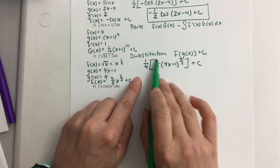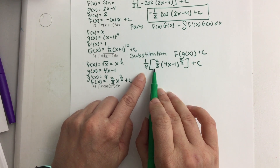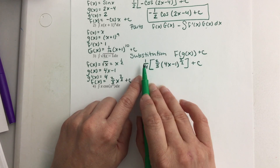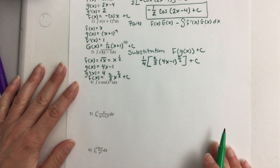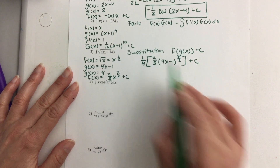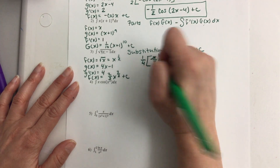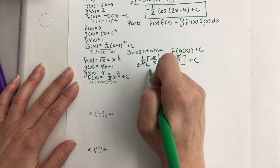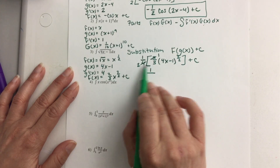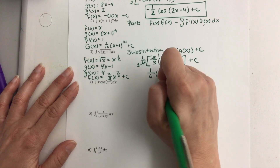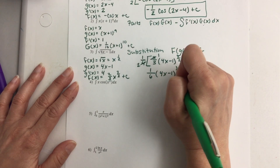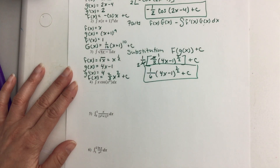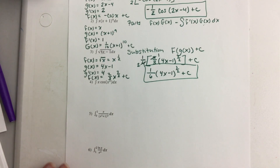Now the antiderivative of f of x: with an exponent of one half, adding 1 gives three halves. Dividing by three halves is the same as multiplying by the reciprocal, which is two thirds — so it's two thirds x to the three halves plus c. With one fourth out front, I fill in g of x where x is: two thirds times 4x minus 1 to the three halves plus c. Cross-canceling 2 and 4 by dividing by 2 gives one sixth times 4x minus 1 to the three halves plus c. That's it for number 3.